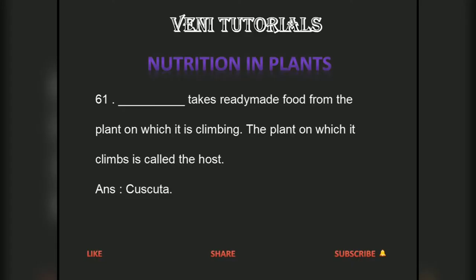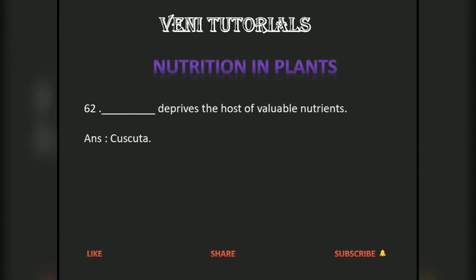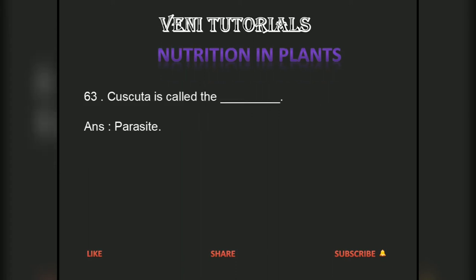Cuscuta takes ready-made food from the plant on which it is climbing. The plant on which it climbs is called the host. Cuscuta deprives the host of valuable nutrients. Cuscuta is called a parasite.